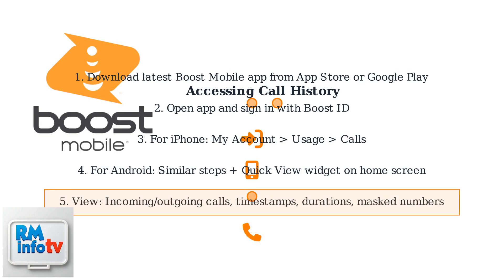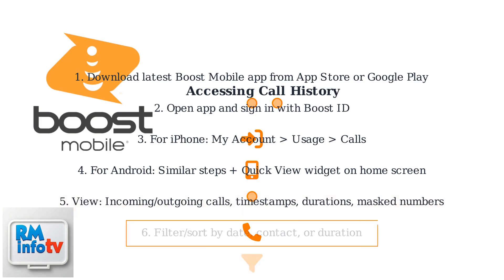The call history shows incoming and outgoing calls with timestamps, durations, and partially masked phone numbers for privacy. You can filter and sort the history by date, contact, or duration.